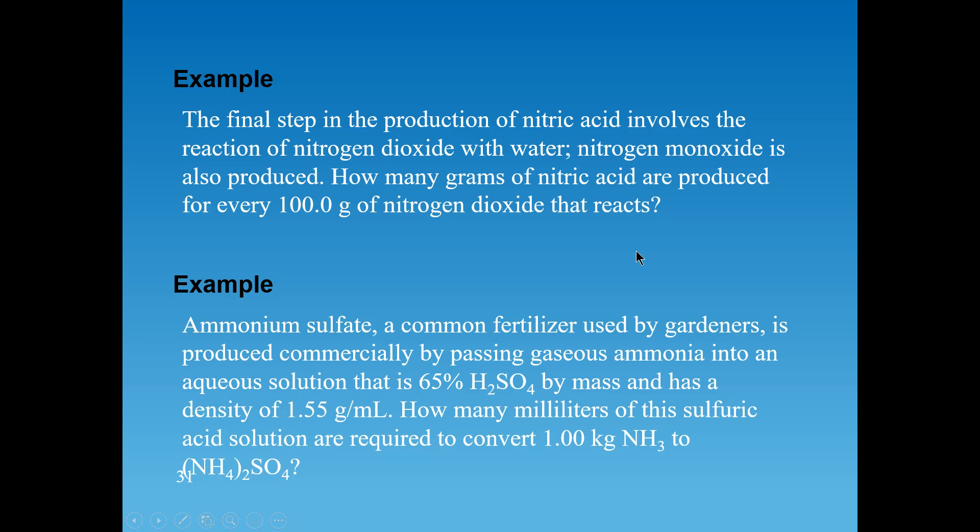So basically, as I said before, whenever we're doing a stoichiometric type problem, we have to identify a correct balanced equation. Now in this case, they did not give us that, but they give us enough information for us to determine that. So we have to look at this question carefully to determine what are the reactants and what are the products. So the first sentence says the final step in the production of nitric acid involves the reaction of nitrogen dioxide with water. So what that tells me is that nitric acid is one of the products and the reactants would be nitrogen dioxide and water.